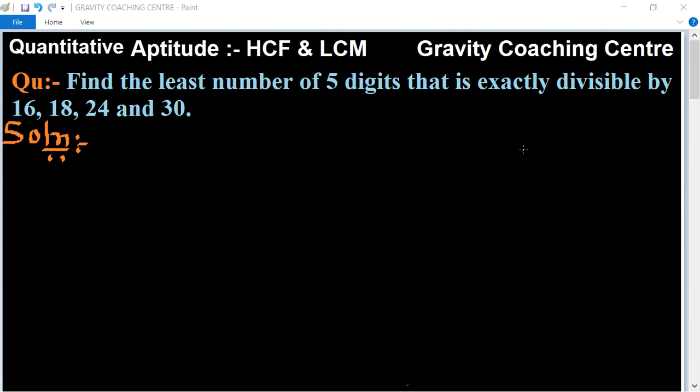In this question, find the least five-digit number which is exactly divisible by the given numbers. So first we know that the least five-digit number is equal to 10,000.